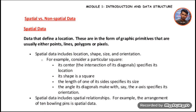So guys, spatial versus non-spatial data. Firstly we will begin with spatial data. Spatial data - data that define a location. These are in the form of graphic primitives that are usually either points, lines, polygons or pixels.